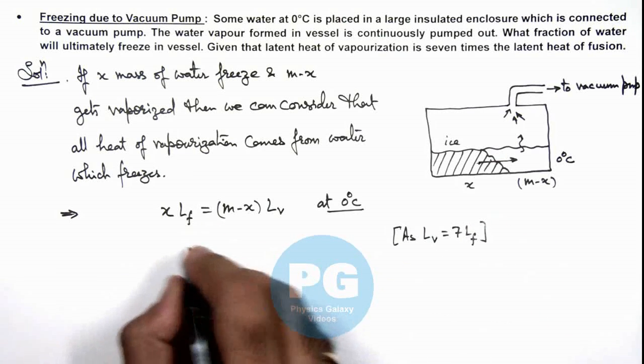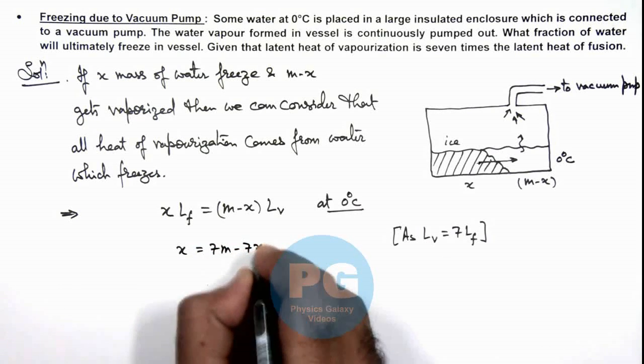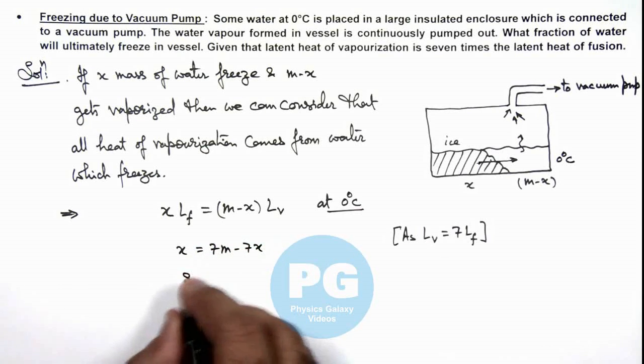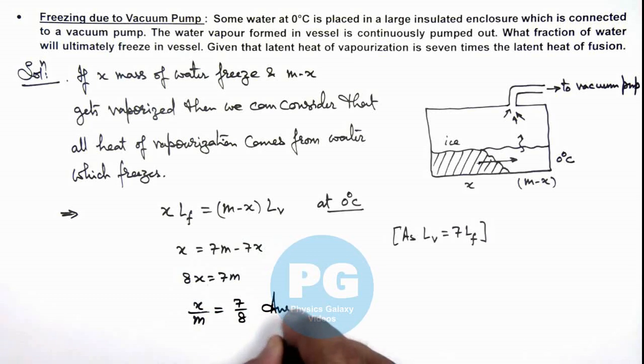So in this situation this becomes x is equal to 7m minus 7x, so it gives 8x is equal to 7m. Or the fraction of water x by m which will freeze out is equal to 7 by 8. That is the result of this problem.